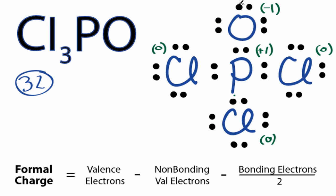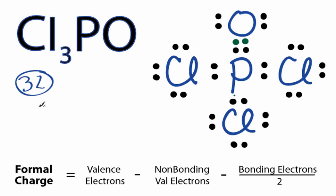What we can do is take these 2 valence electrons on the Oxygen and form a double bond with the Phosphorus. We're still using the 32 valence electrons we have for the Cl3PO Lewis structure.